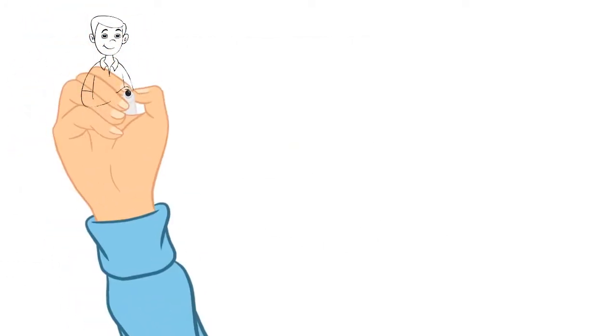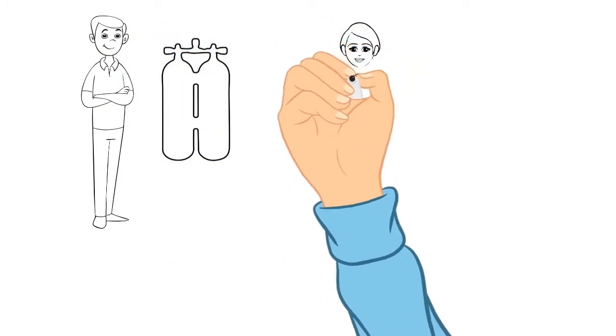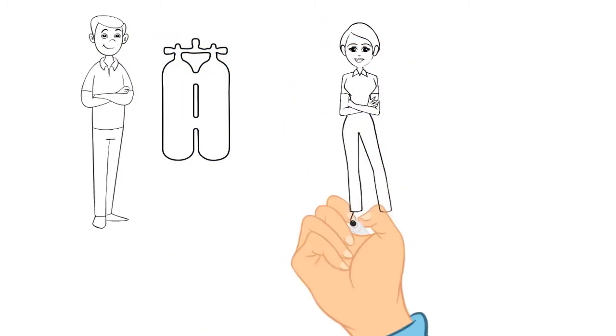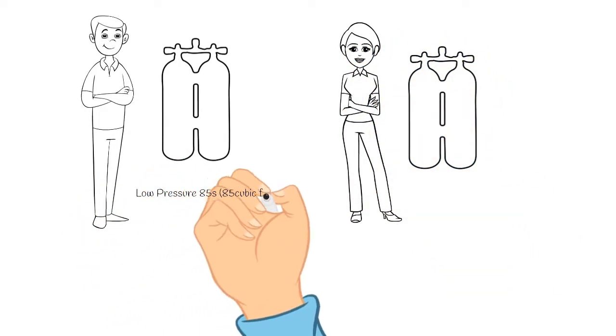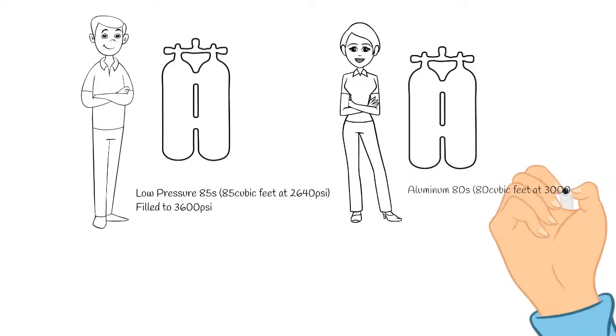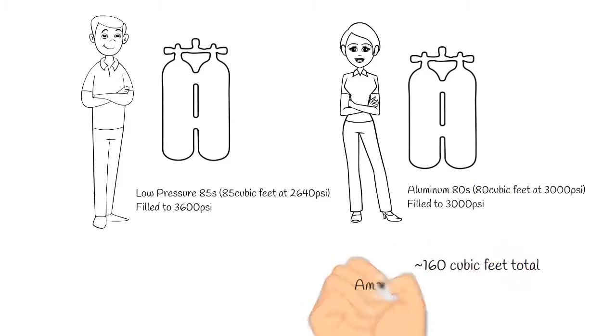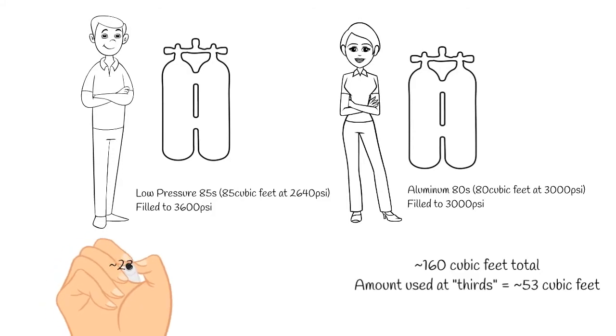If we think back to earlier where one diver had 80s and one diver had 85s, we can apply this baseline math to figure out at what point this diver on the left with 85s should turn around so that way he matches the volume that his buddy is breathing. If we remember earlier, it was 53 cubic feet is the 1000 psi that she would turn around.